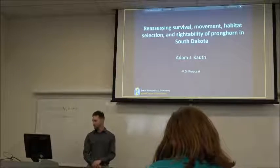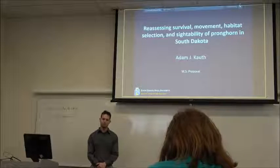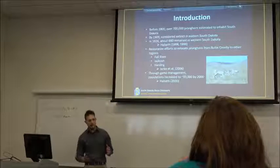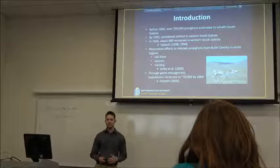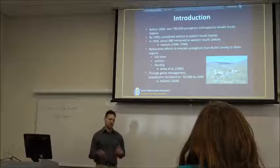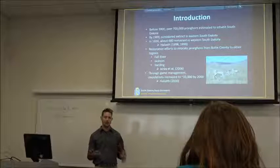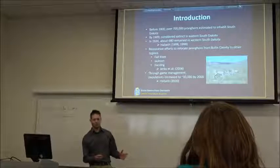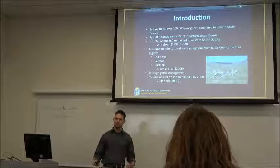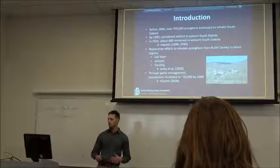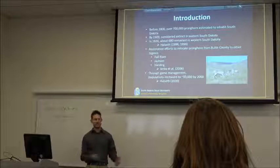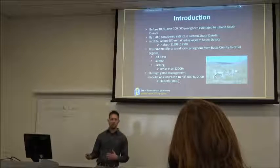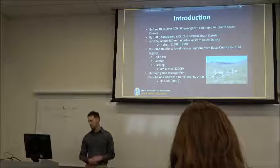Like I already mentioned, our project is reassessing the survival, movement, habitat selection, and sightability of pronghorn in South Dakota. To give you a little background information, prior to 1800, there was an estimated population of about 700,000 pronghorn found throughout the state of South Dakota. However, with the advent of people moving into the west during the 1800s, those populations dramatically declined, and by 1909, pronghorn were actually considered extinct east of the Missouri River in the state, and by 1924, there was only an estimated 680 remaining in western South Dakota.